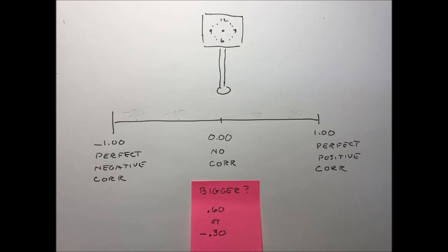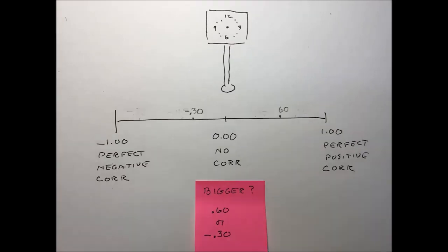Here's another problem. Which one is bigger? 0.60 or minus 0.30? Make the marks on the number line and you can see that 0.60 is farther from zero than is minus 0.30. That's an easy one.